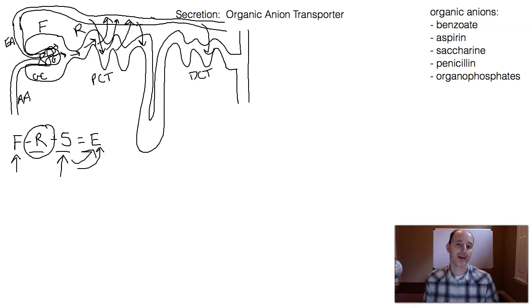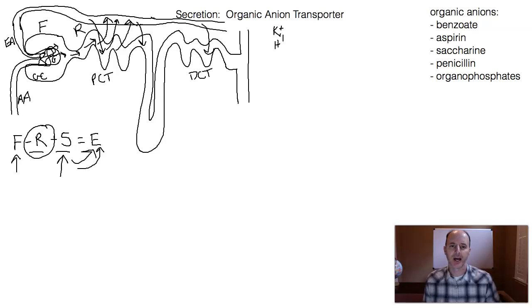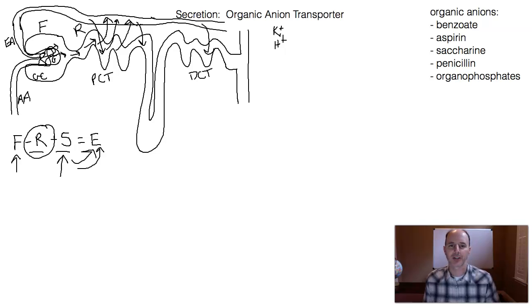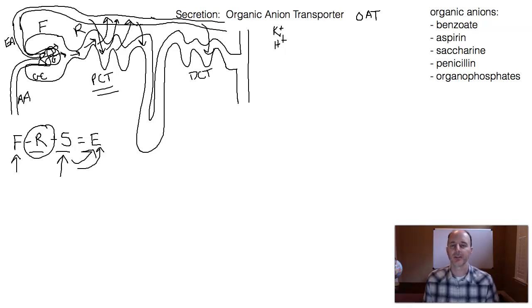There is a very important mechanism of secretion called the organic anion transporter mechanism. There can be secretion of many different things — secretion of potassium, secretion of hydrogen ions — and those processes are different from what we see with the organic anion transporter system. Even though it's all secretion — taking molecules out of the blood and putting them into the nephron — there are different mechanisms. This particular mechanism, the OAT system, the organic anion transporter system, takes place in the proximal convoluted tubule. Even though there is secretion in the distal convoluted tubule as well, the OAT system is in the proximal convoluted tubule.